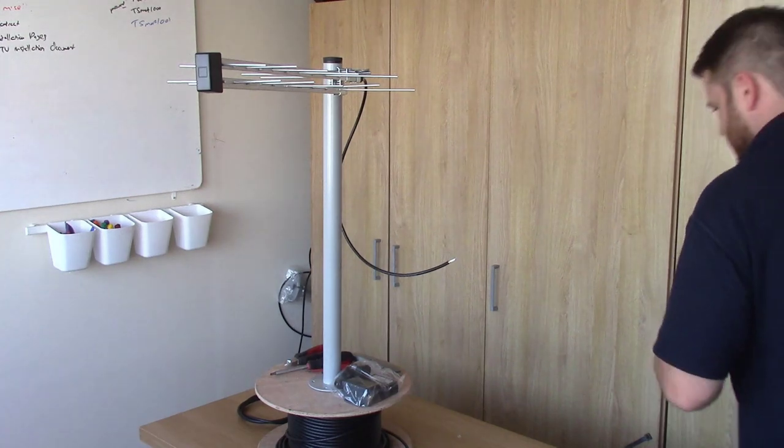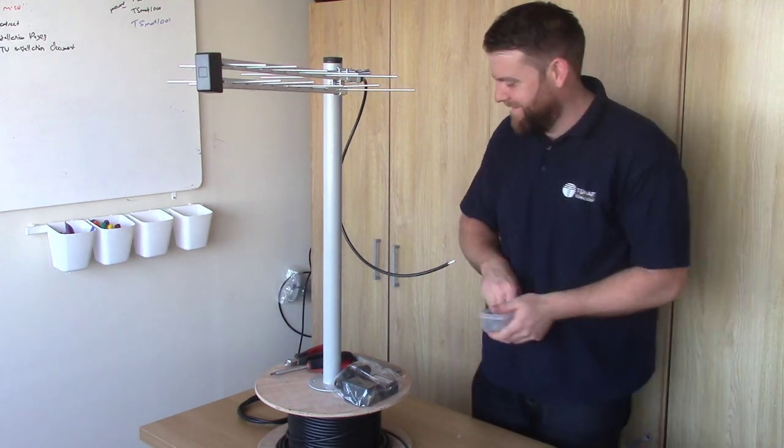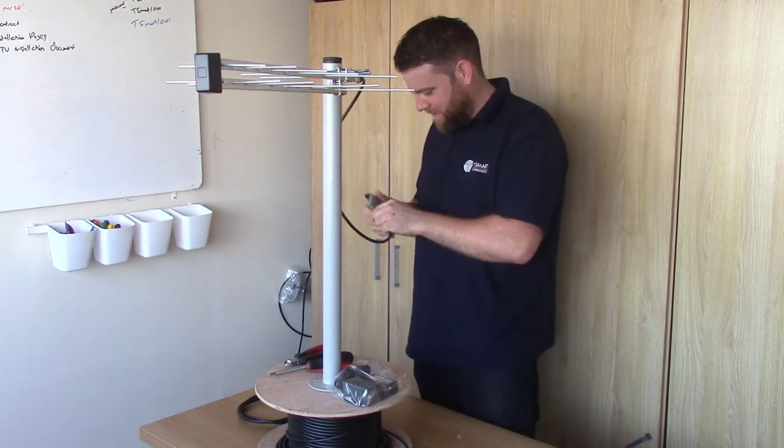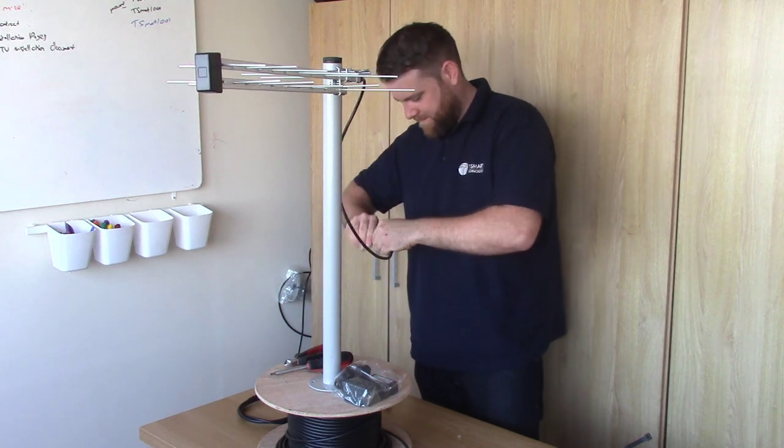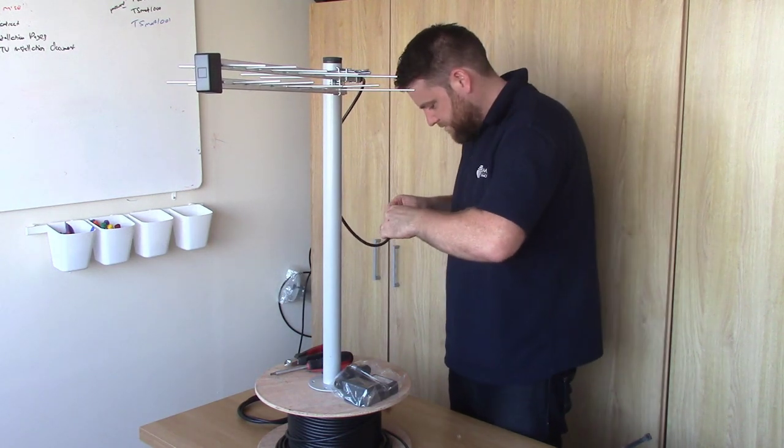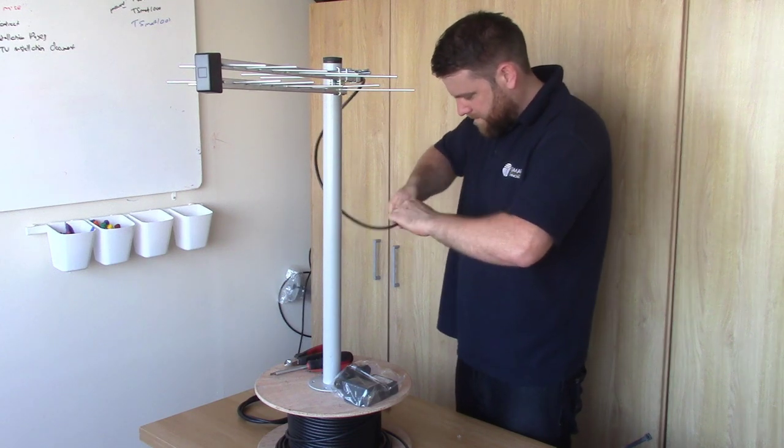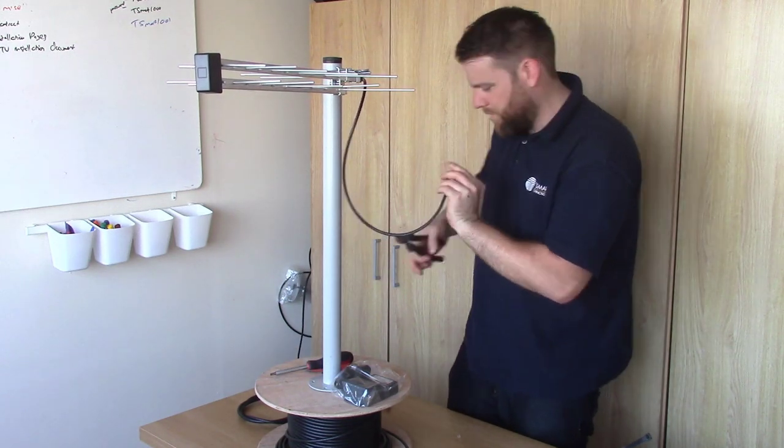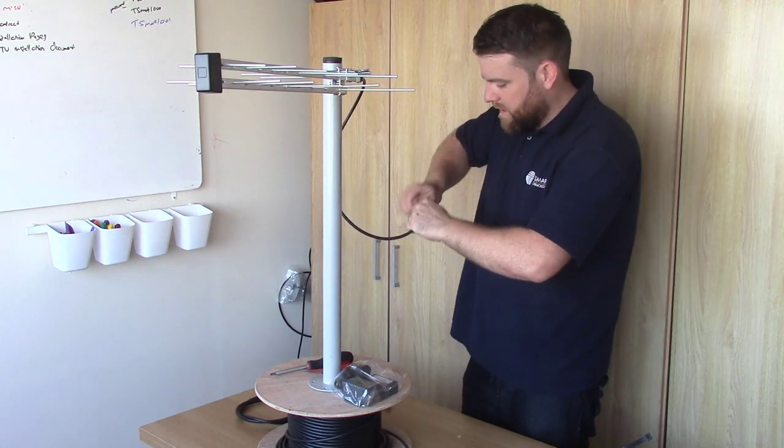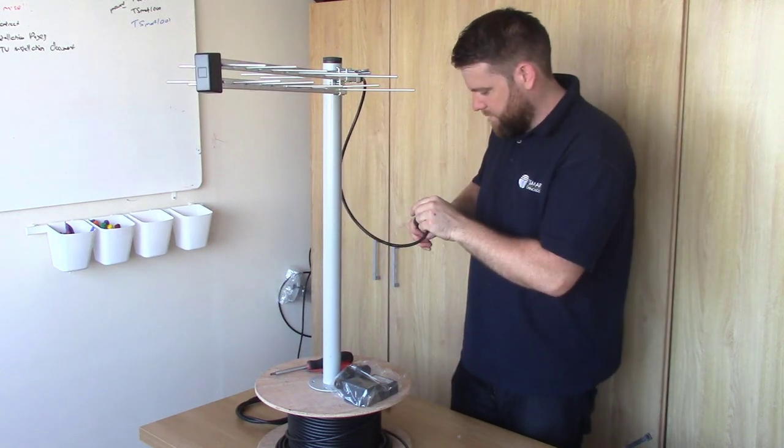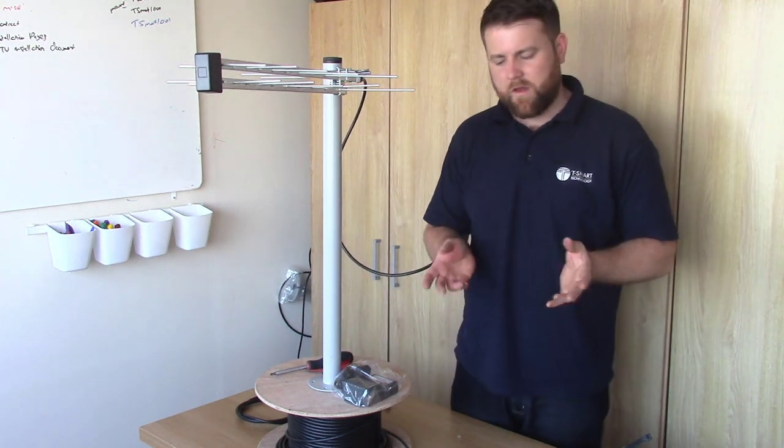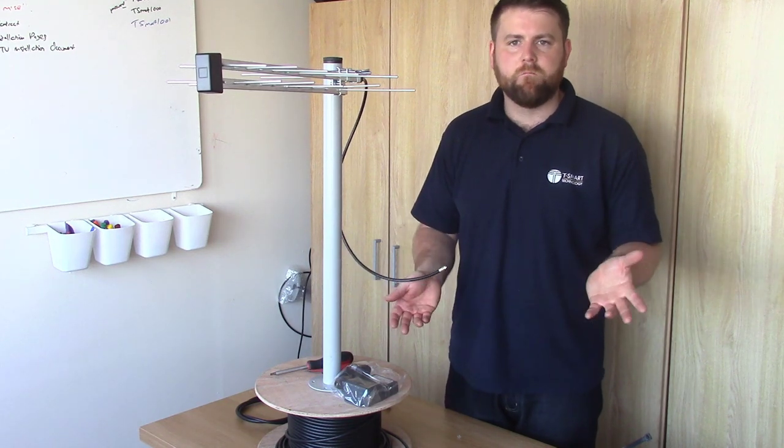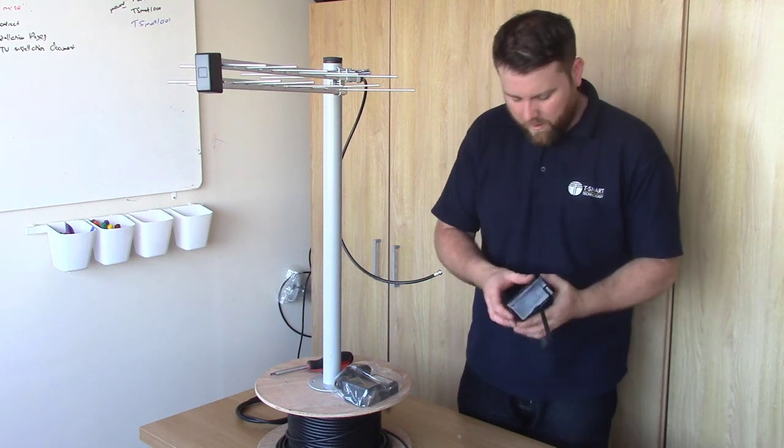When I was listing the tools we had earlier, I didn't actually mention the parts. Obviously we're going to need the masthead amplifier itself, the power supply unit, and the F connectors, if it's that type of connection. A lot of masthead amplifiers still use the clamp type connection. Some power units use the coax IEC type plug. But nowadays it's generally most common to come across F connectors. They probably are the best ones to use.